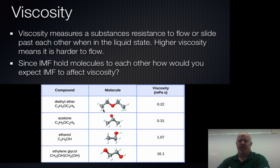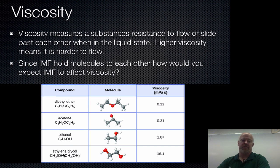Let's look at our data. Diethyl ether has four carbons and is a polar molecule, so it has dipole-dipole interactions. Acetone is also a polar molecule. Ethanol is a polar molecule with hydrogen bonding, and ethylene glycol is also a polar molecule with hydrogen bonding. So we have two that are only dipole-dipole and two that are able to hydrogen bond.